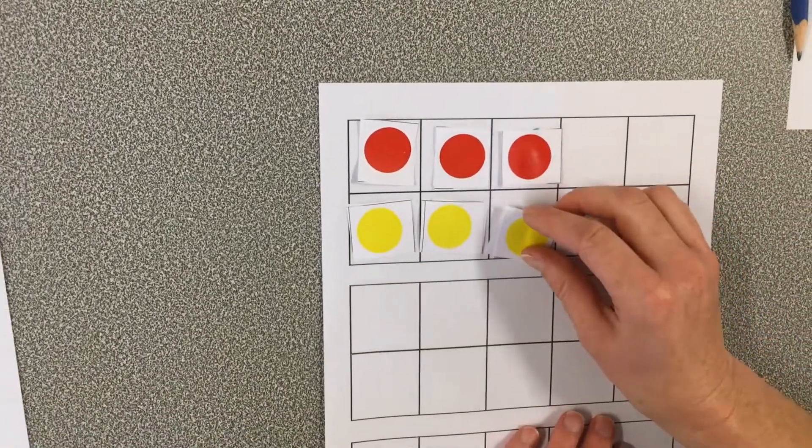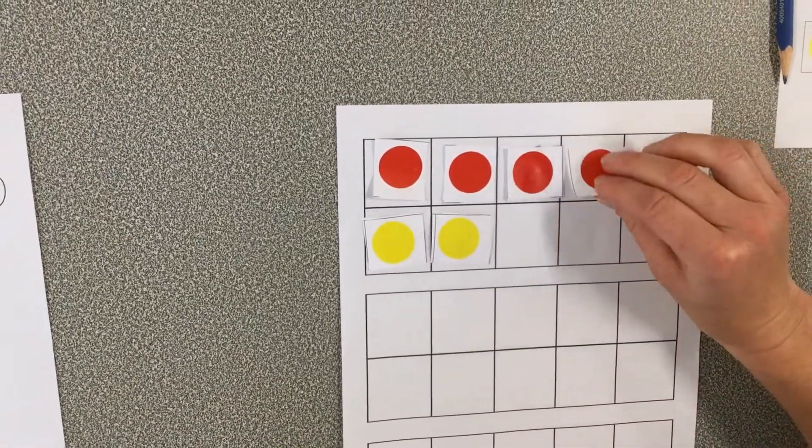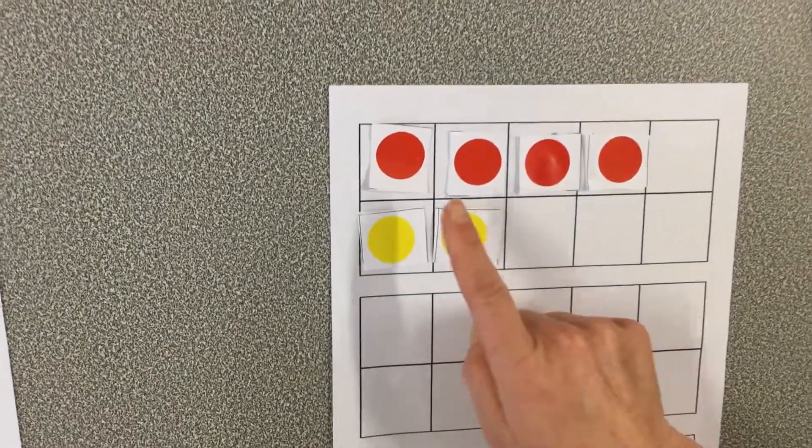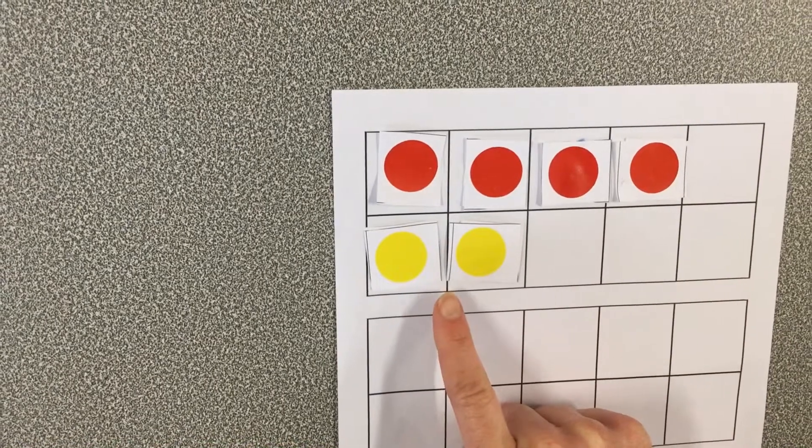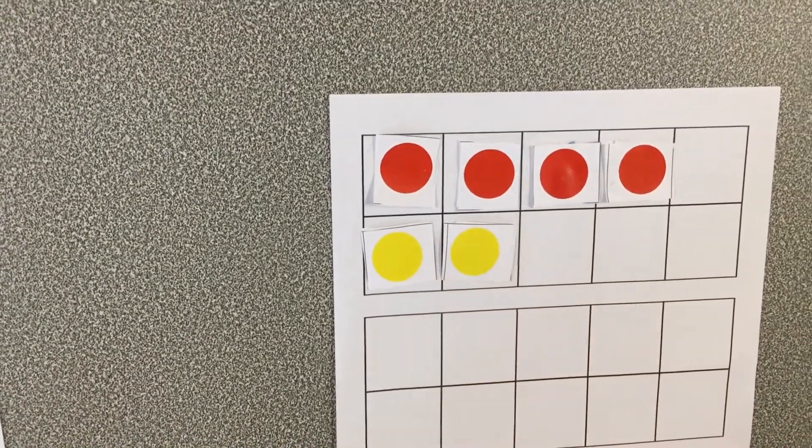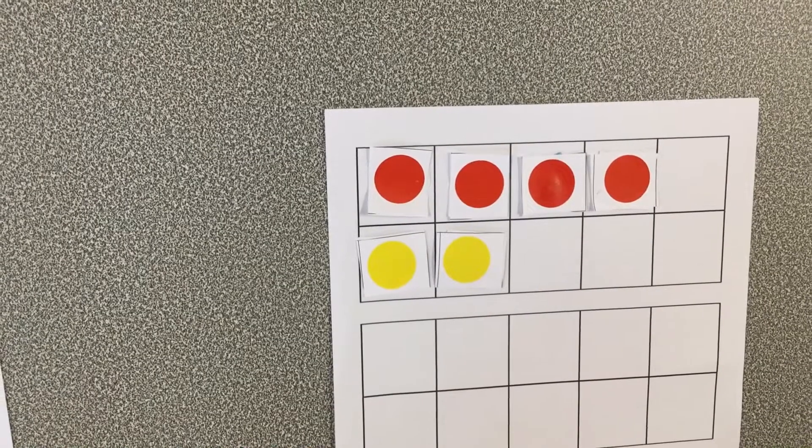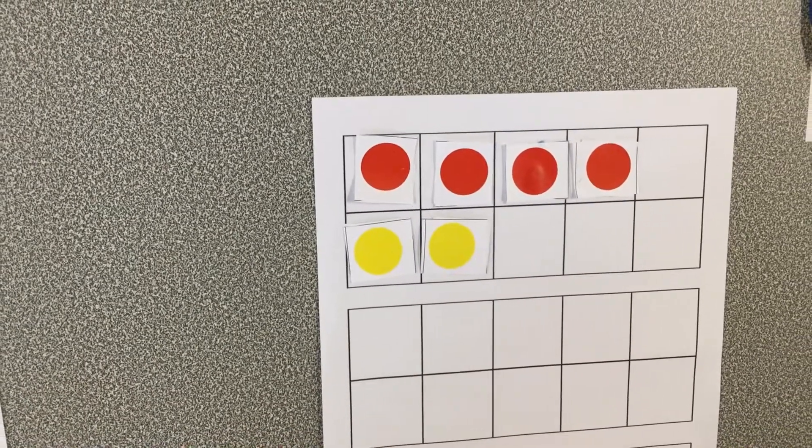We could also partition it. What if I put this one up here? Now I've got a group of four and a group of two. Do you know what, preps? Nothing's changed. It's still the number six. We're just looking at what we can use to make the number six.